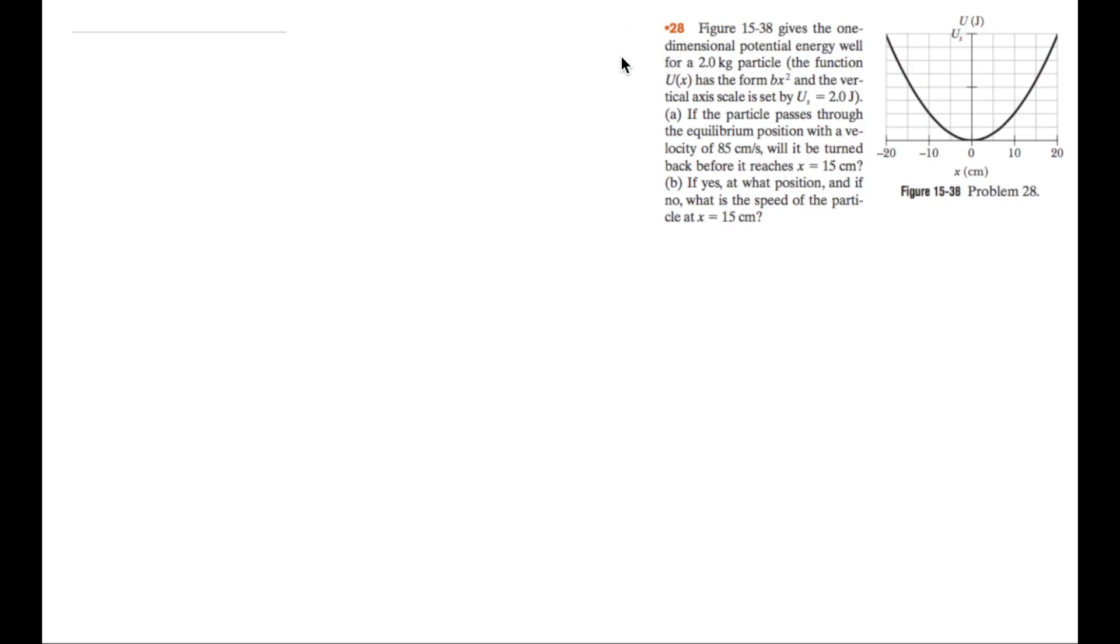Figure 1538 gives the one-dimensional potential energy well for a 2.0 kg particle. The function U of x has the form bx squared, and the vertical axis scale is set by Us equal to 2.0 joules.